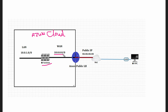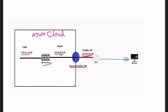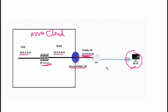The WAN subnet will be 10.0.0.0 and the LAN subnet will be 10.0.1.0. After installation, Azure Cloud will provide us a public IP to access this firewall. The Azure public load balancer will route the traffic to the public IP address. From my local PC, connected to the internet, I will access this FortiGate firewall using the public IP address.